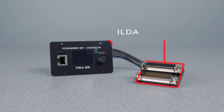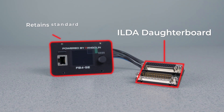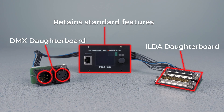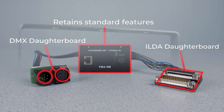FB4 ILDA also retains the same functions as Standard, but instead of DMX, it's included with an additional ILDA daughter board for ILDA in and out. Then we have FB4 MAX, which combines all versions of FB4 into one, giving you all the features of the Standard FB4 with full DMX and ILDA control.